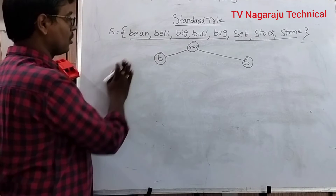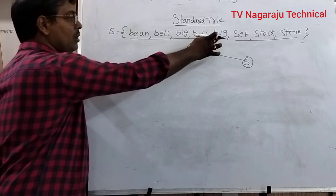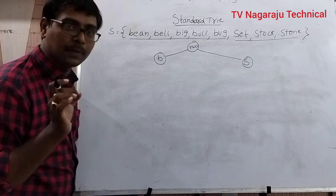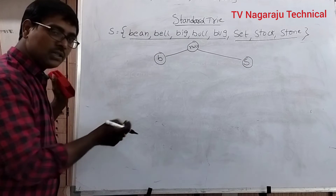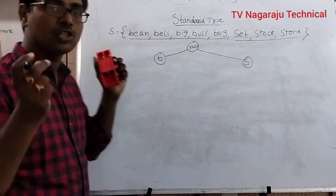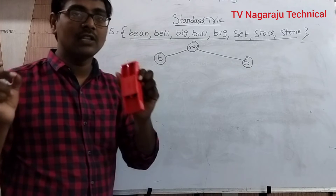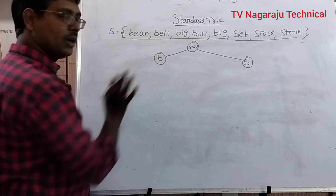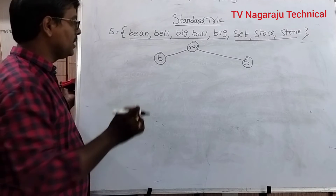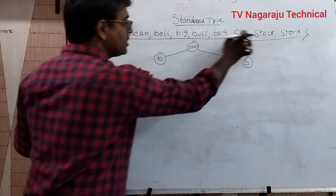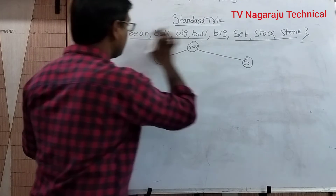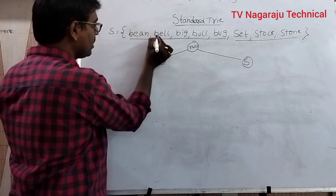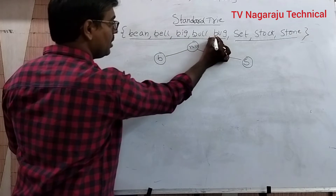Now under B, we have different strings. Which string is to be represented first? Because in the rules we said children of a node are arranged in alphabetical order. Among the second characters — E, E, I, U, U — E is the minimum. So we process the B-E strings first.